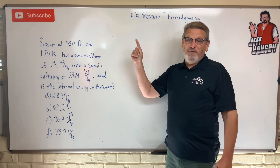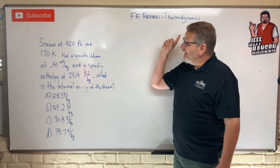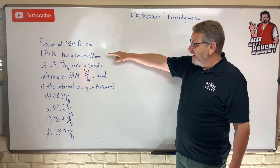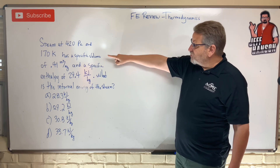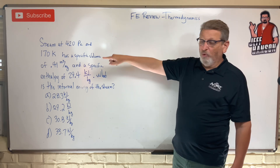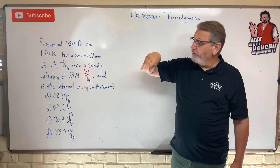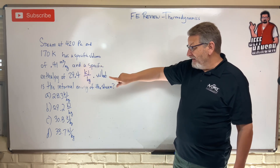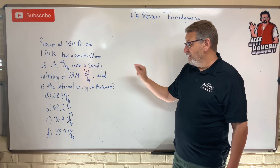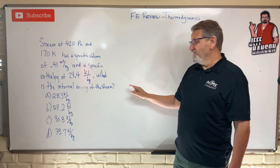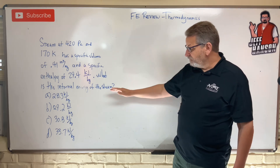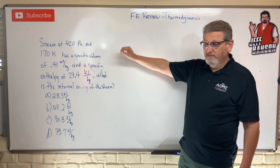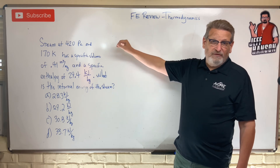Welcome to your next EPI review problem on thermodynamics. We have steam at 420 pascals and 170 kelvin. It has a specific volume of 0.41 meters cubed per kilogram and a specific enthalpy of 29.4 kilojoules per kilogram. What is the internal energy of the steam? Here are your choices — press pause, and when you come back I'll solve it for you.